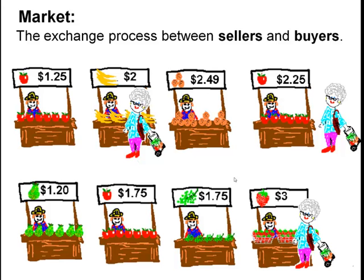When we use the terms sellers and buyers, it links back to this idea of suppliers and those who demand. Sellers are the producers of goods or services who make the supply available. Buyers are consumers or those making purchases who create a demand for the goods and services.